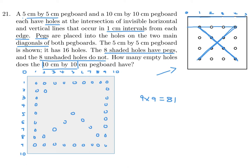Drawing the diagonals in, each diagonal has 9 holes. But it's not 9 plus 9 — it's 9 plus 9 minus 1, because the center hole is common to both diagonals. So the total number of shaded holes is 17.